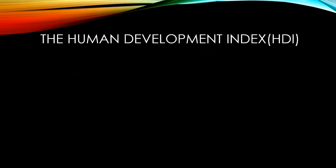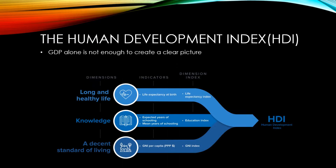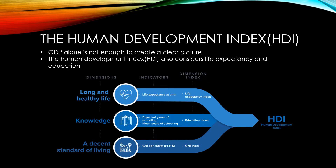GDP alone is not enough to create a clear picture. It makes up one of three parts to the Human Development Index, developed by the United Nations to judge development. The HDI also considers life expectancy and education as key factors in development in a country.